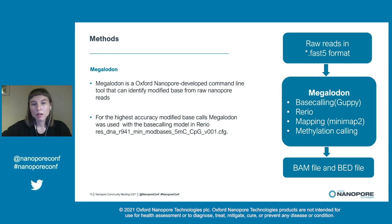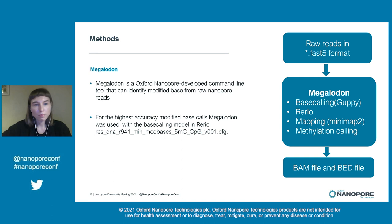After MinION sequencing, we obtained raw reads in FAST5 format. For modified base extraction, we used Megalodon. Megalodon is an Oxford Nanopore-developed command line tool that can identify modified bases from nanopore reads by anchoring the information-rich base-calling neural network output to a reference genome. For the highest accuracy modified base calls, Megalodon was used with the base-calling model in res_dna. Megalodon post-processing includes base-calling from raw signal data, mapping the sequences to the reference sequence, methylation calling, and storing the results in BAM alignment files.